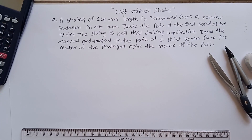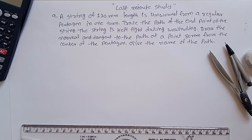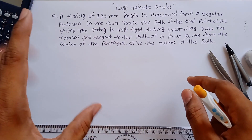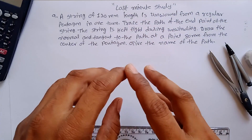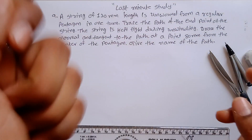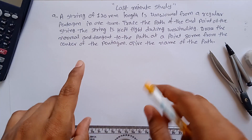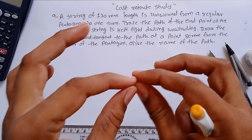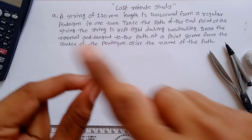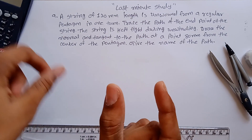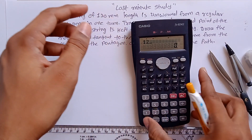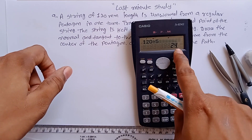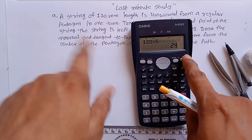Problem number 9 from engineering drawing is a category of involute in which a string is wound on a pentagonal shape. If you unwind it, you have to draw the unwinding procedure. Here they give us a string length of 120 mm. If you wound it around the pentagon, the side of the pentagon would be 120 mm divided by 5, which gives you 24 mm.